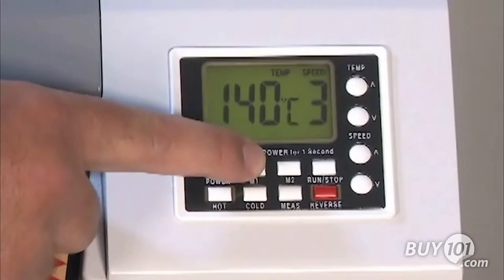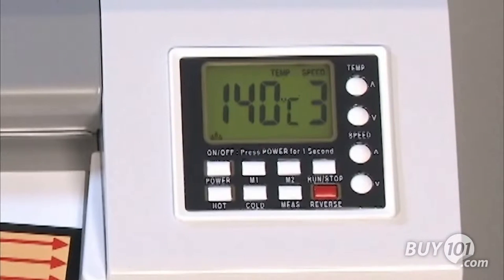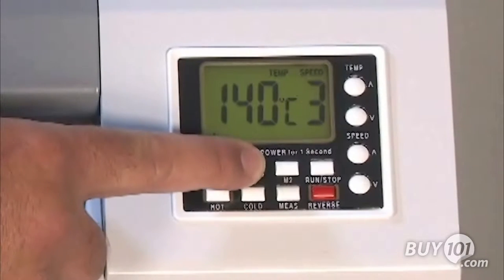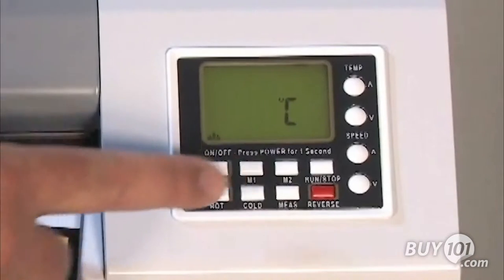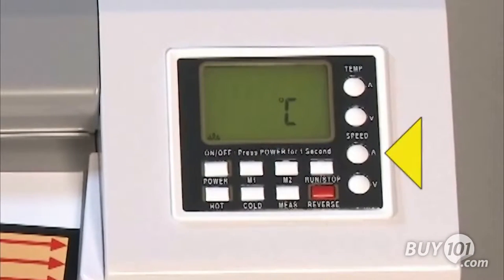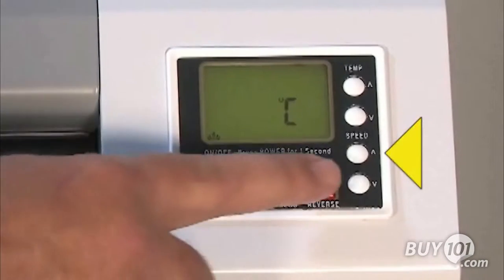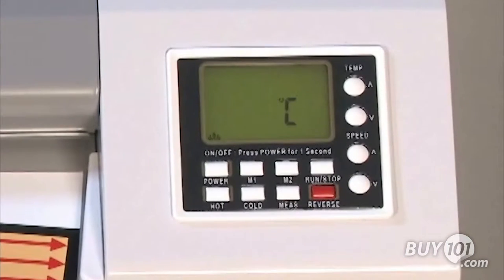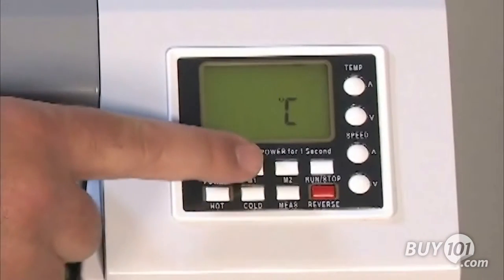Quickly press and release the M1 button. Then check the display. Make sure Temp equals 140 degrees Celsius and Speed equals 3. If not, press and hold M1 until the numbers on the display flash. Then use the Temp and Speed up and down arrows to adjust the settings. Press M1 again to exit adjustment mode.